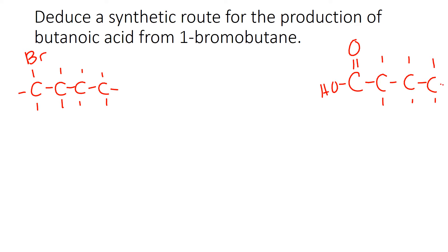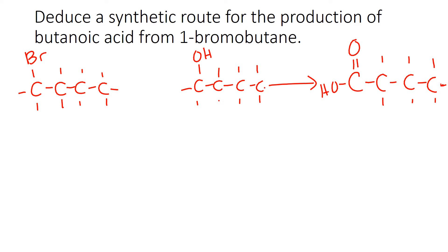If I'm not sure where to go, I could work from either end. When I see a halogeno alkane, I know these react via nucleophilic substitution, so that's a possibility. When I look at butanoic acid, that tells me it's quite possibly a product of oxidation. Working backwards: I can make butanoic acid from butan-1-ol. To get the carboxylic acid product as opposed to the aldehyde, I would need to react it under reflux using potassium dichromate as an oxidizing agent.